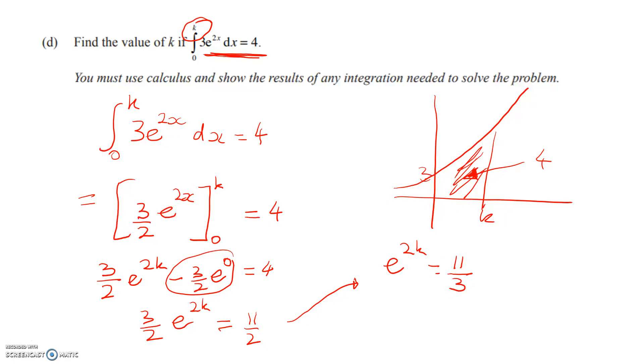Now I can take logs of both sides. So 2k is equal to the natural log of 11 over 3. And k is equal to a half log 11 over 3, which is a pretty ugly number, really. It's just 0.6496.